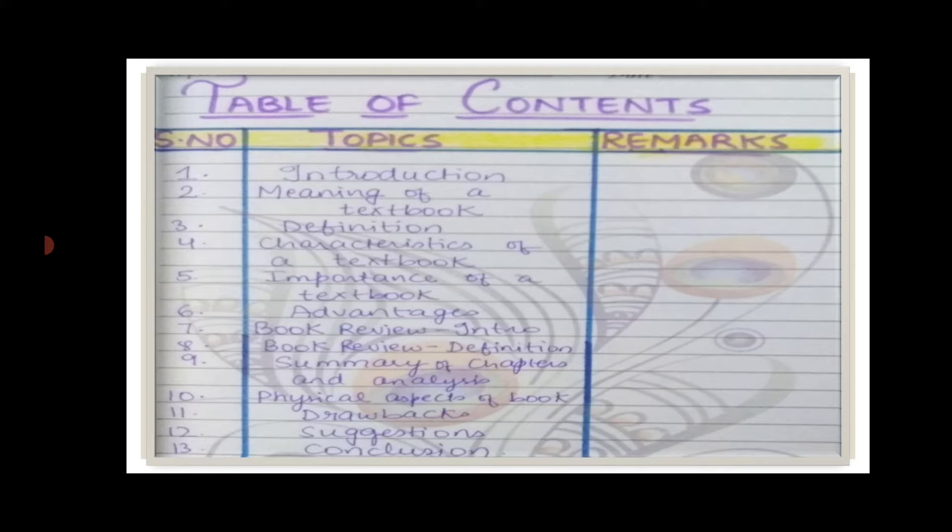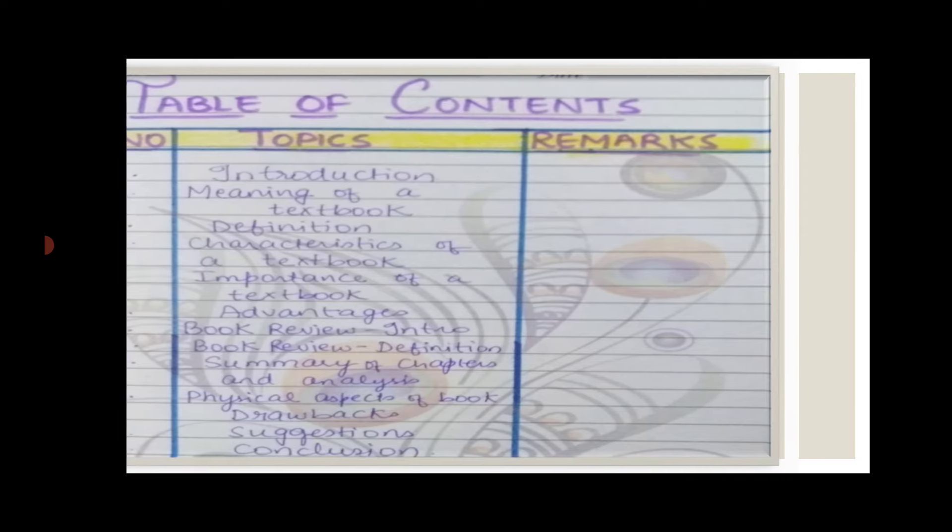In the summary section, you have to write the summary of all the chapters given in the book. Additional index topics include physical aspects of a book, drawbacks, suggestions, and conclusion. We will discuss these one by one.